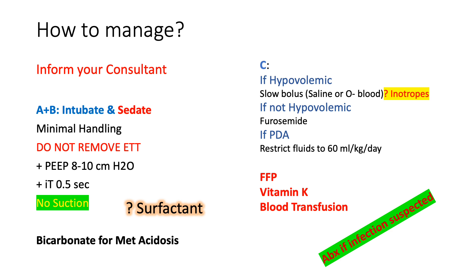Consider surfactant — although surfactant itself may be associated with increased risk of pulmonary hemorrhage, if hemorrhage has occurred it may help as a treatment. Correct any metabolic acidosis using bicarbonate. Regarding cardiovascular management, be very careful with fluids: the underlying pathology is most likely hemorrhagic pulmonary edema, so additional fluids will worsen the edema. If the child is hypovolemic, give a bolus — ideally a blood product rather than saline — and consider inotropic support.